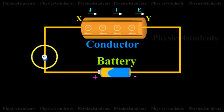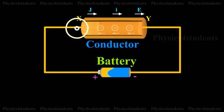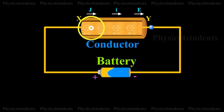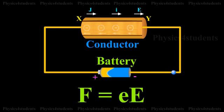But as soon as an electric field is applied, the free electrons at the end Y experience a force F equals eE in a direction opposite to the electric field.